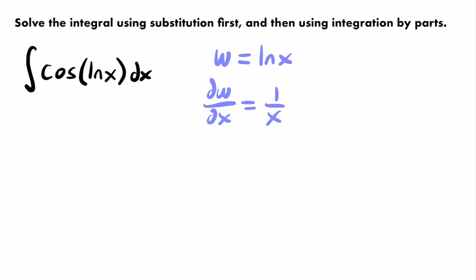When you're in a scenario where u-substitution doesn't seem to be helping, the first thing I'd recommend is to solve for dx. See if you can represent dx in terms of w. Since we've already set the natural log of x equal to w, the only thing left to rewrite is dx — we'd like it expressed as some term including dw.